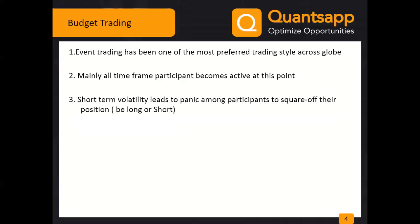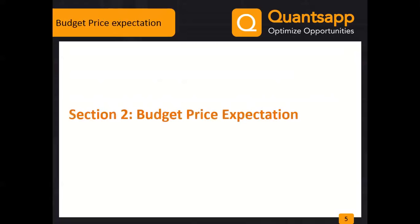What happens in the budget? India VIX was trading near 12.40 and has suddenly gone to around 16.2. This is not new — every time, short-term volatility leads to panic among participants. Portfolio holders worry about negative budget outcomes, and traders, speculators, and medium time-frame participants all come in, creating this panic. Our main motive is to navigate this volatility in a smoother manner.